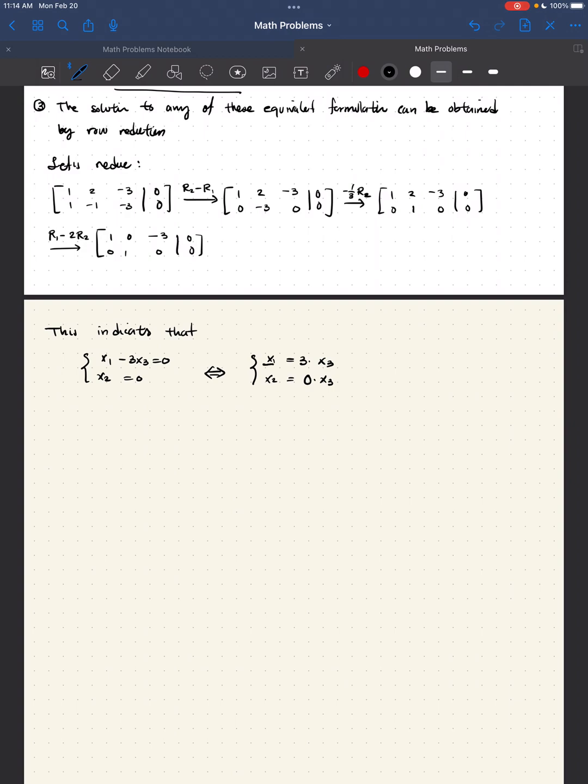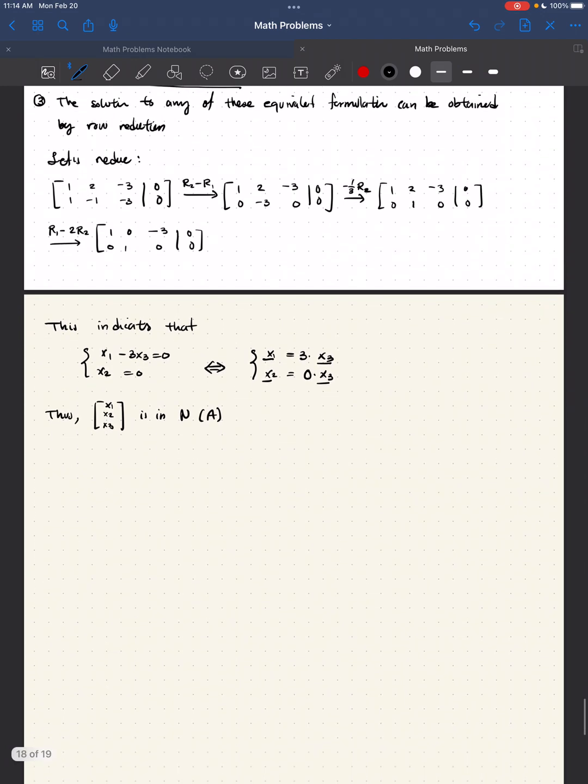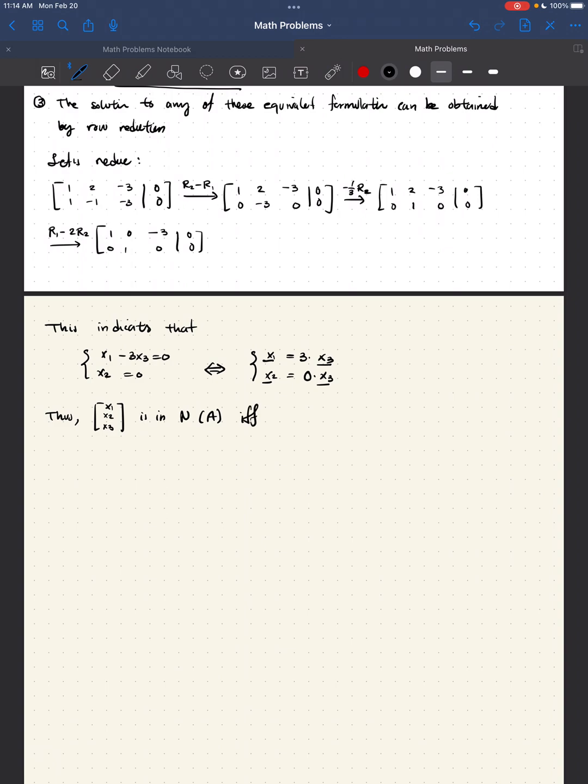So now, what we are exhibiting here is that these unknowns, x1 and x2, can be made dependent on x3 only. So, we have that a vector [x1, x2, x3] is in the null space of the matrix that we were discussing originally, meaning this one. If and only if we have [x1, x2, x3] equal to [3x3, 0x3, x3], which of course can be described as [3, 0, 1] times x3. For every real number, x3.